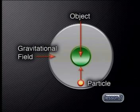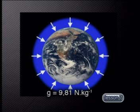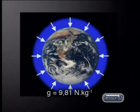The gravitational field of an object pulls other particles or objects towards its center of mass. So, the gravitational field of the Earth pulls things down towards the center of the Earth. On the Earth's surface, the gravitational field strength, G, is 9.81 newtons per kilogram.